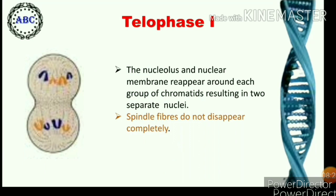In telophase first, the chromosomes persist for some time in the condensed state. The nucleolus and nuclear membrane reappear around each group of chromatids, resulting in two separate nuclei. The spindle fibers do not disappear completely as in mitosis. In most species, after telophase first, interphase is absent, while in some it occurs but for a very short duration. There is no DNA synthesis during this interphase.